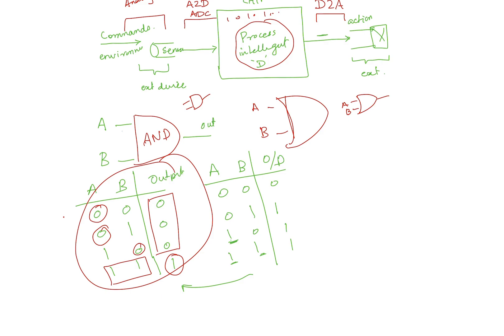Another gate is the inverter: a single input and output. When input is 0, output is 1; when input is 1, output is 0. We are simply inverting the input — this behavior is called an inverter.